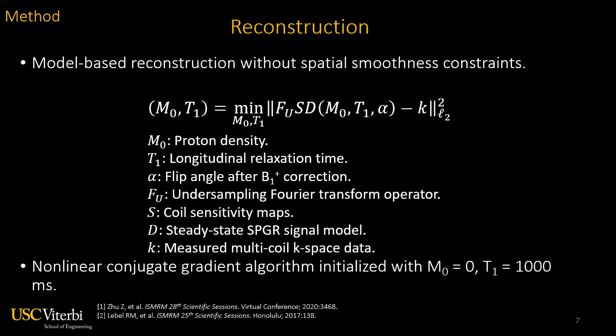Pre-contrast T1 values were estimated by a model-based reconstruction without spatial smoothness constraint. The problem was formulated as shown, in which M0 is the proton density, T1 is the longitudinal relaxation time, alpha is the flip angle after B1-plus correction, FFU is the undersampling Fourier transform operator, S is the coil sensitivity maps, D is the steady-state SPGR signal model, and K is the measured multi-coil k-space data. The problem was solved using a nonlinear conjugate gradient algorithm initialized with M0 equal to 0 and T1 equal to 1000 milliseconds.